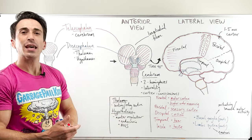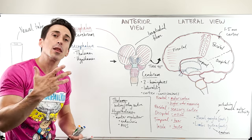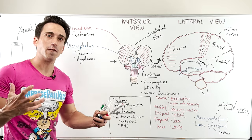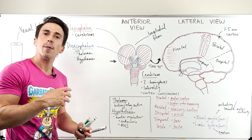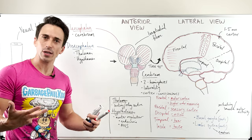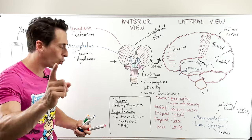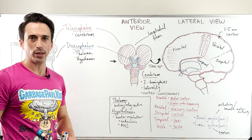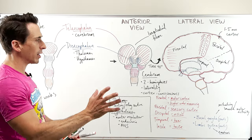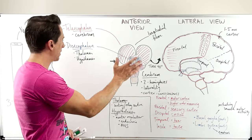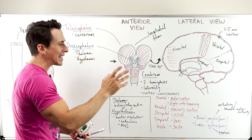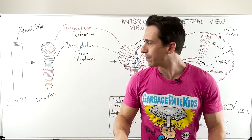The autonomic nervous system — sympathetic fight-or-flight and parasympathetic rest-and-digest — is also controlled by the hypothalamus. So that's the thalamus and hypothalamus in the diencephalon.